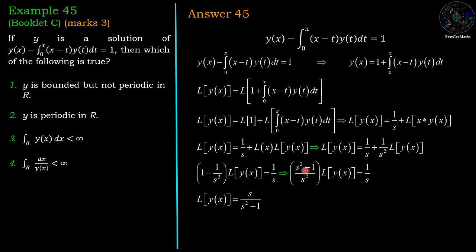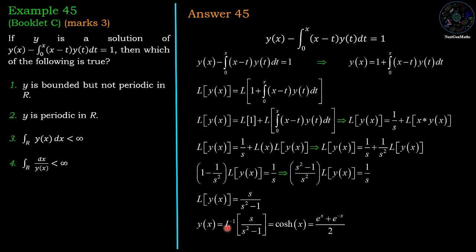Taking the coefficient of Laplace of y(x) to the other side, we get Laplace of y(x) equals s divided by (s² minus 1). Taking the inverse Laplace on both sides, y(x) equals L⁻¹ of s/(s² minus 1). Since L⁻¹ of s/(s² minus 1) is cosh(x), which equals (e^x plus e^{-x})/2, the solution is y(x) equals cosh(x).